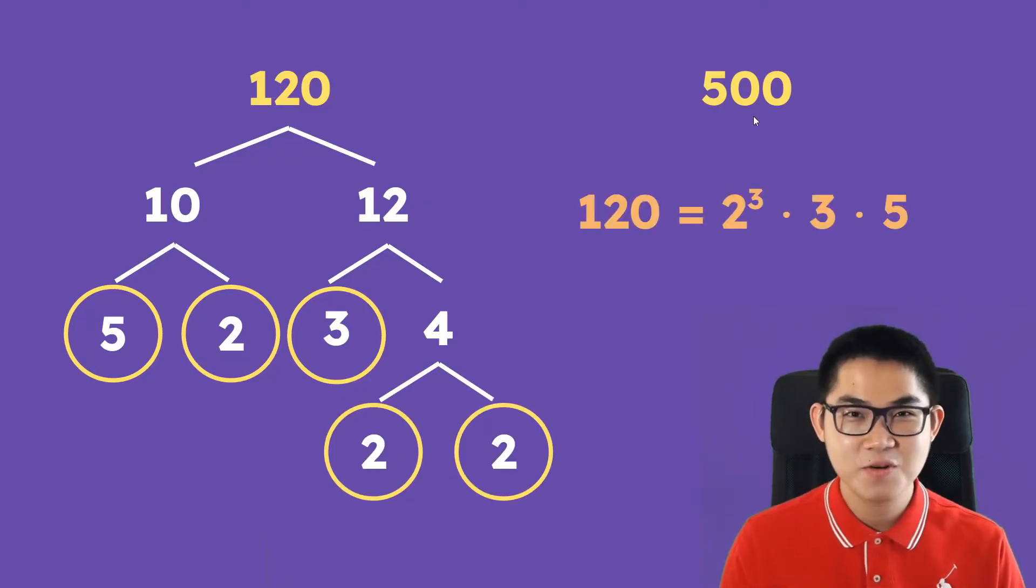This means that 120 is equal to 2 to the power of 3 because we have 2 times 2 times 2, so 2 to the power of 3 times a 3 because we have the 3 here and then times 5. So I want you to write it like this and let's go ahead and do prime factorization for 500.